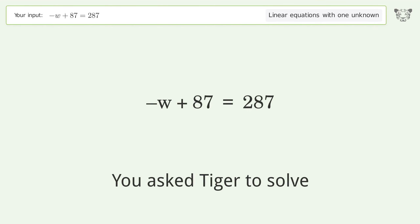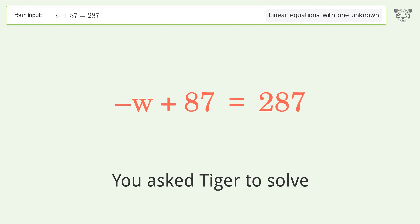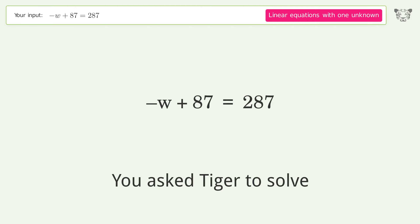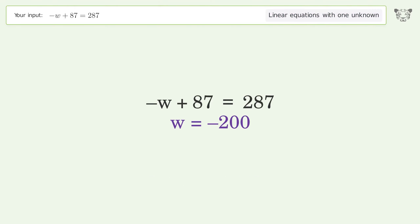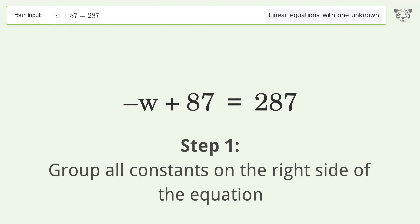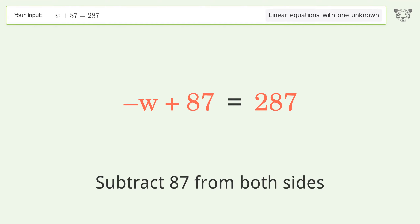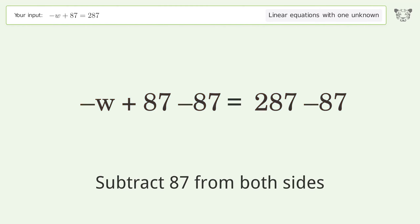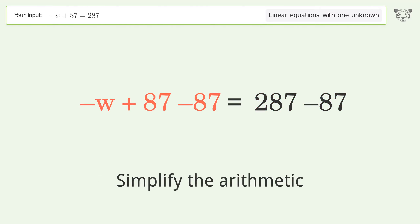You asked Tiger to solve this — it deals with linear equations with one unknown. The final result is w equals negative 200. Let's solve it step by step. Group all constants on the right side of the equation, subtract 87 from both sides, then simplify the arithmetic.